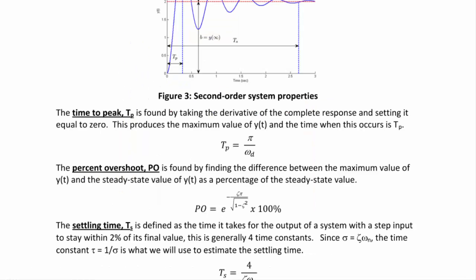The settling time ts is defined as the time it takes for the output to stay within 2% of its final value. For a first order system this is generally four time constants. For a second order system, since σ = ζωₙ, the time constant τ = 1/σ, and we estimate the settling time as 4/(ζωₙ).